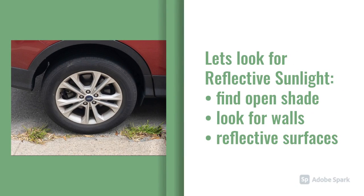Next, let's look at reflective sunlight. Look for open shade, look for your subjects next to walls or reflective surfaces. Reflective light is going to be creating those softer shadows, and that's what you're looking for — really nice detail in the shadows.